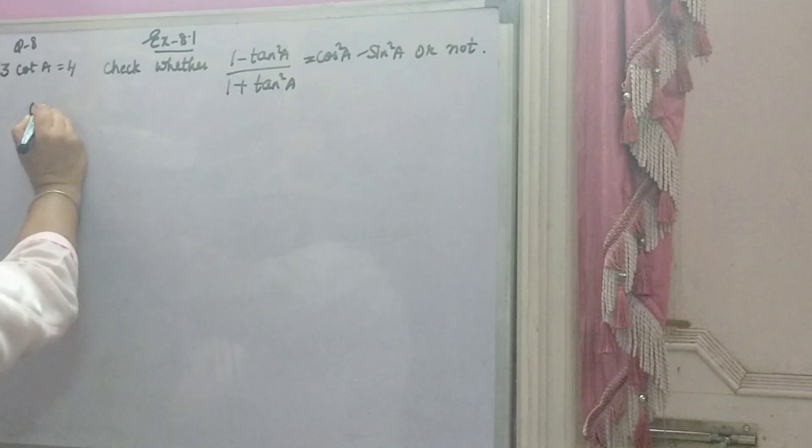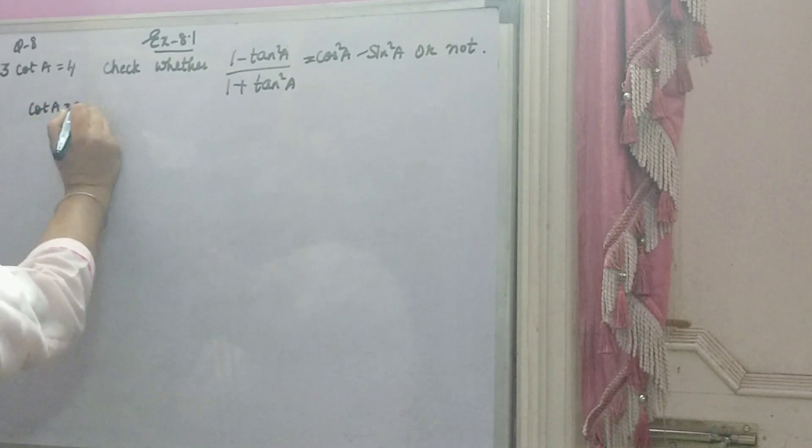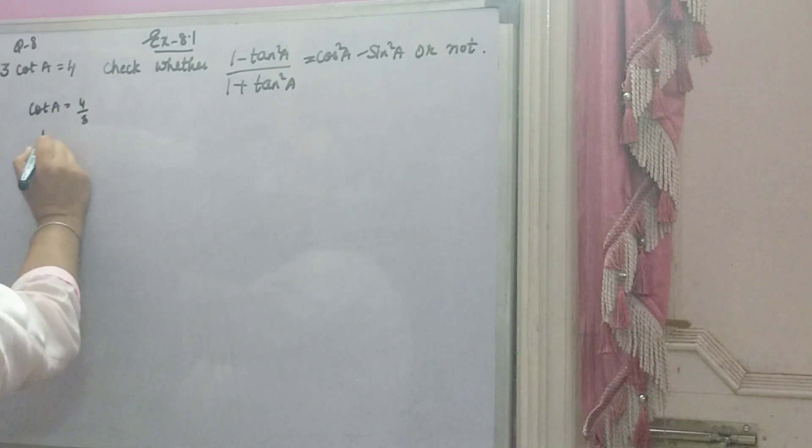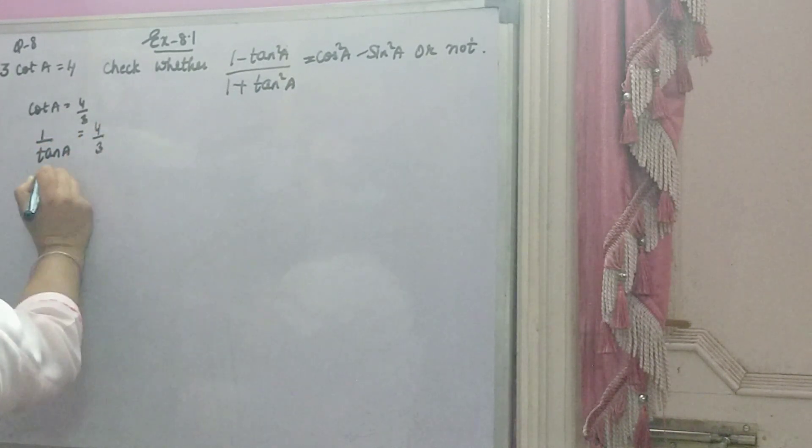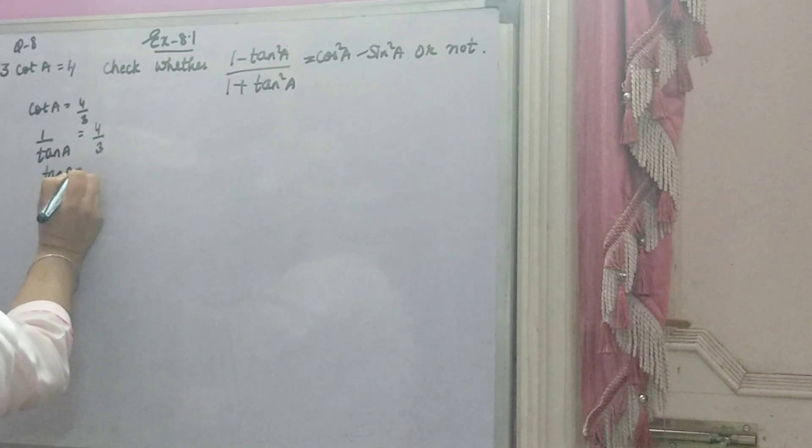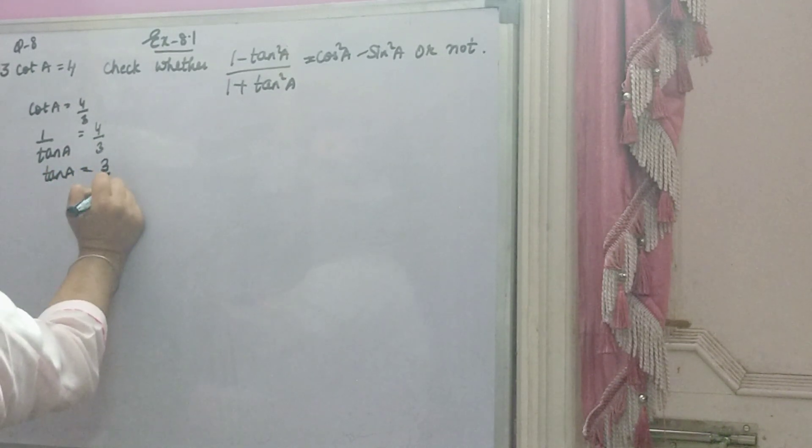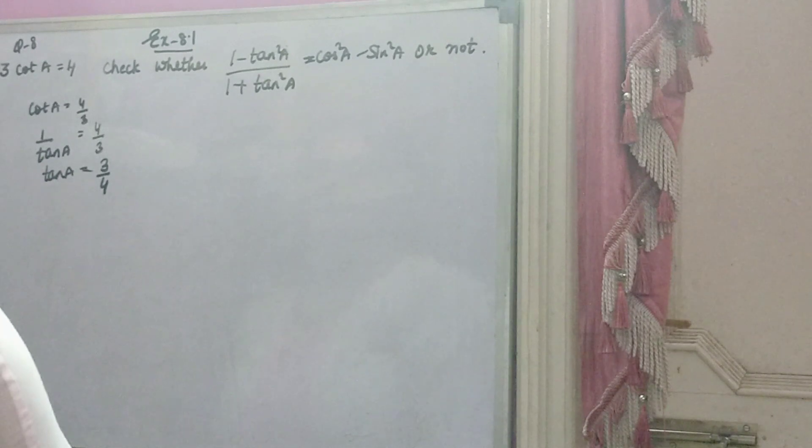Now you see, cot A ki value diye hai. 3 idar aje ka 4 by 3. Cot uttar 1 over tan. 1 over tan ki value ho gai 4 by 3. So, tan A ki value ho gai 3 by 4.